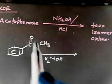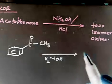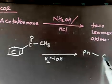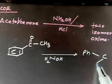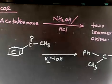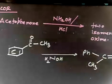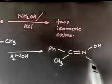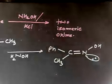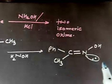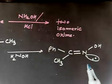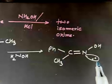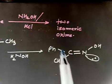What will happen is H2O will get lost. So you will have one side a phenyl group, then CH3, and here you have a double bond N-OH. Now there is a lone pair on this nitrogen. This can exist as cis as well as trans — you have Ph and the lone pair on one side.